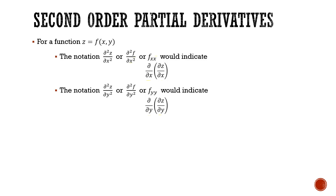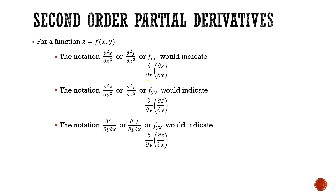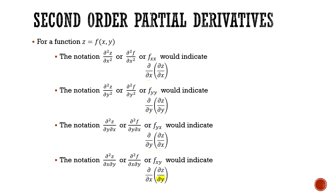We don't always have to take the derivative with respect to the same variable both times. Sometimes we first take the derivative with respect to x, and then take the derivative of that with respect to y. In this case, the notation would be ∂²z/∂y∂x, or f sub yx. If we reverse this and take the derivative with respect to y first and then x, the notation becomes ∂²z/∂x∂y, or f sub xy.